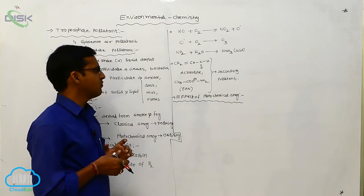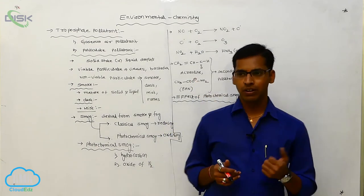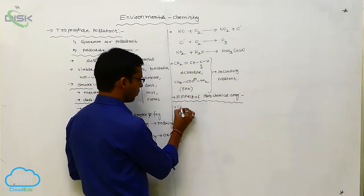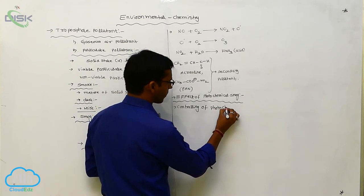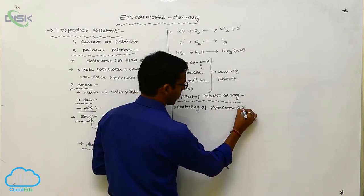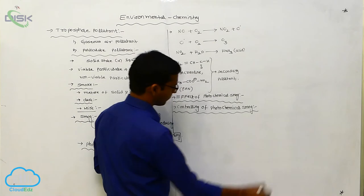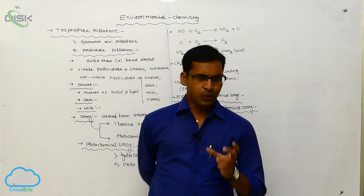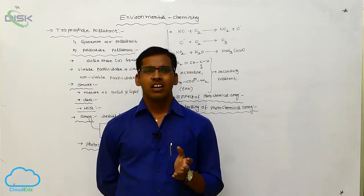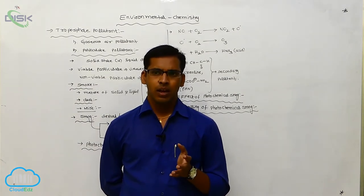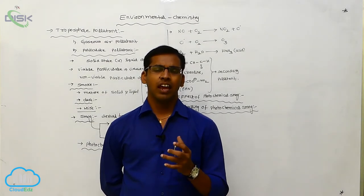So that is the effect of photochemical smog. How to reduce, how to control photochemical smog? Next one, controlling of photochemical smog. The photochemical smog is controlled due to reduced process or oxidized process. By using these two processes, we can control the photochemical smog in environmental studies.